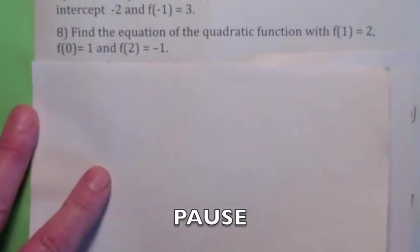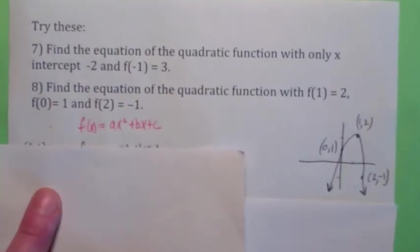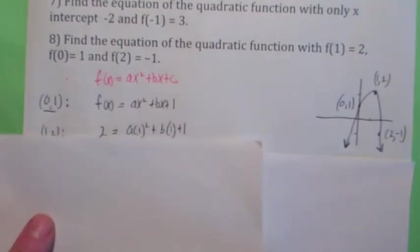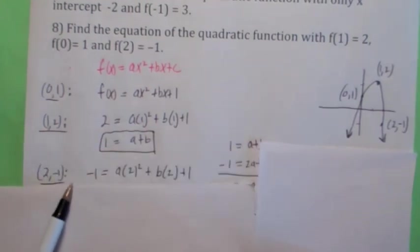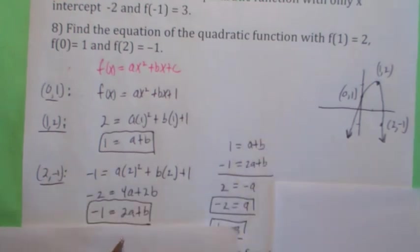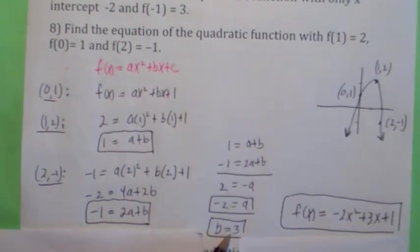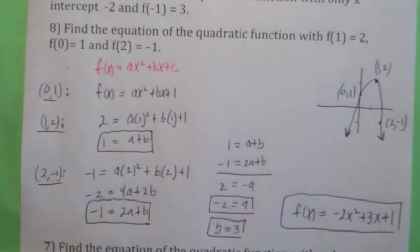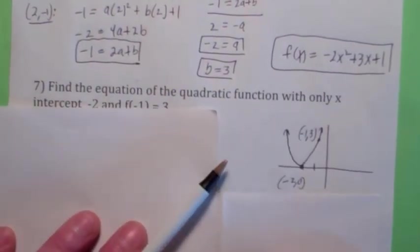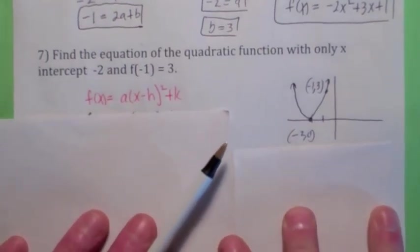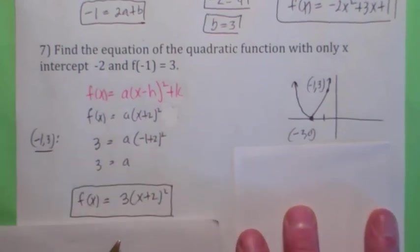For the first practice problem, I drew a picture, found the vertex, plugged in points (1, 2) and (2, −1), solved the system of two equations, got a = −2 and b = 3, giving f(x) = −2x² + 3x + 1. For the second practice problem, if the only x-intercept is −2, that has to be the vertex. So use the vertex form, plug in the point (−1, 3), and solve for a = 3. That's your answer.